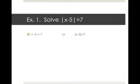For the first example, we're going to solve the absolute value of X minus 5 equals 7. We want to know what numbers are 7 units away from 5. We take exactly what's in the absolute value bars, X minus 5, and set that equal to 7. Then we take the opposite of that expression and set it equal to 7.